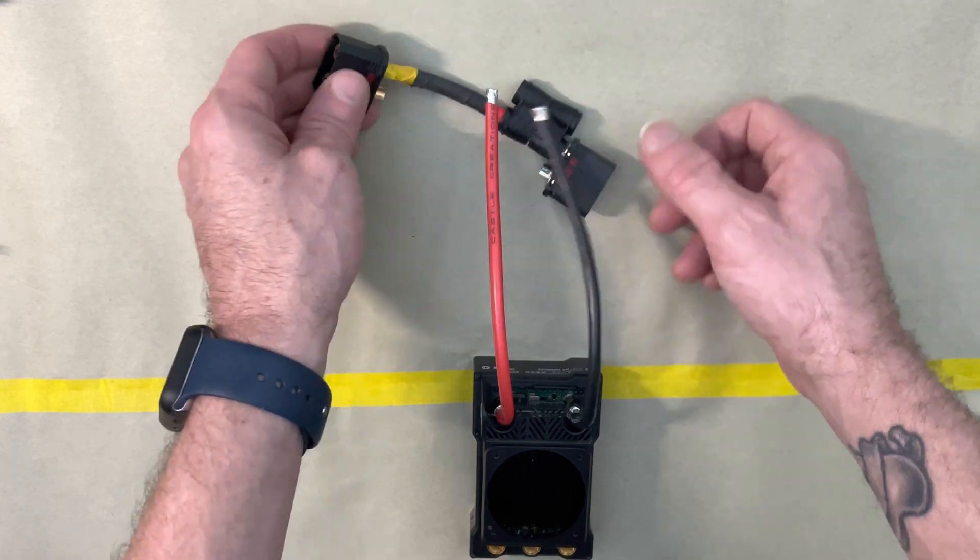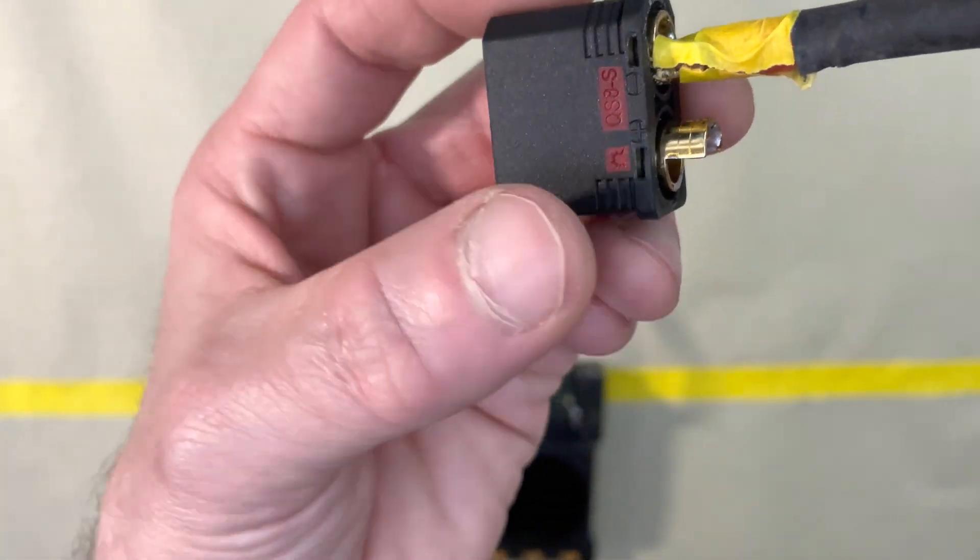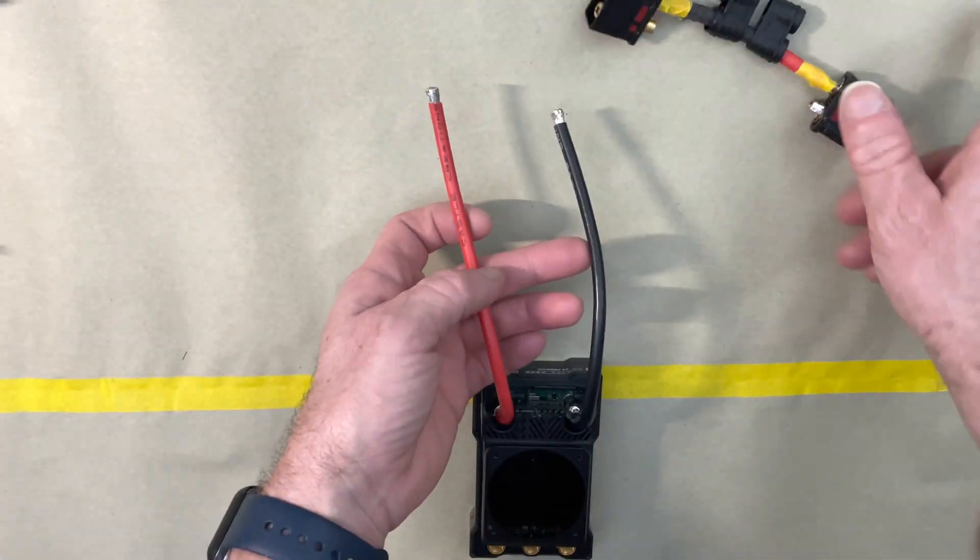But we have this, so turn this over. We have positive on the left and negative on the right, positive on the left, negative on the right.